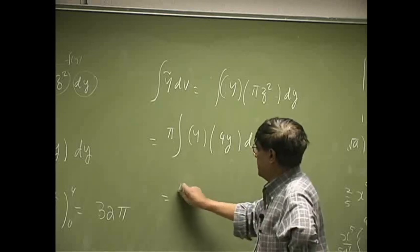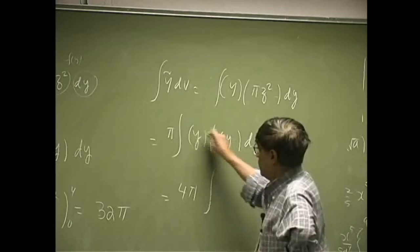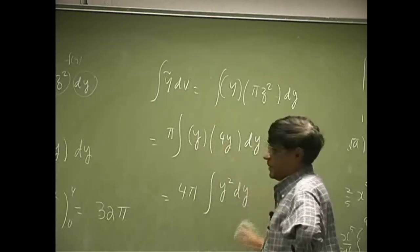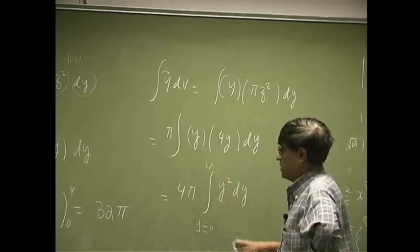So, you got the same. 4 comes out of this again. You have 4 pi. y becomes y squared dy. So, you're looking into limits from 0 to 4.